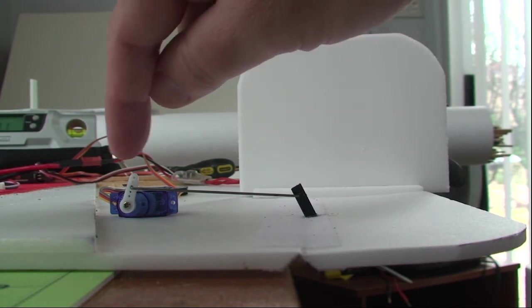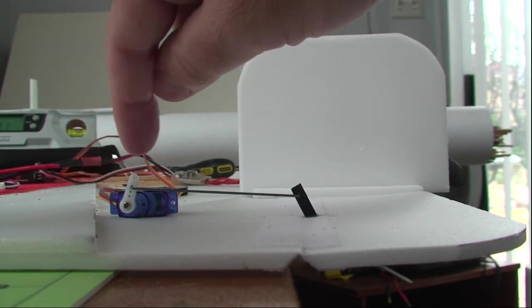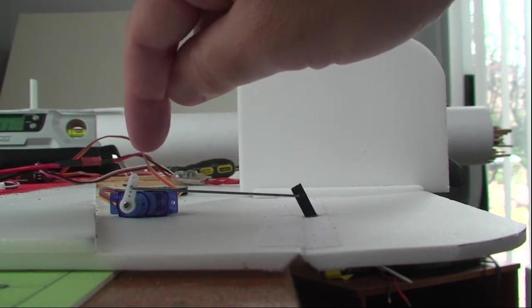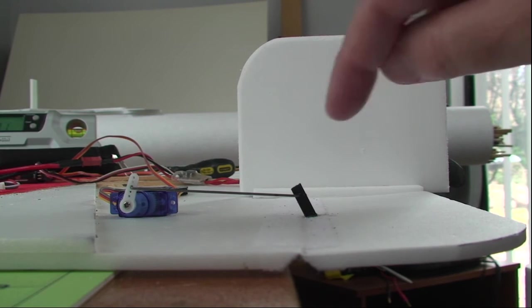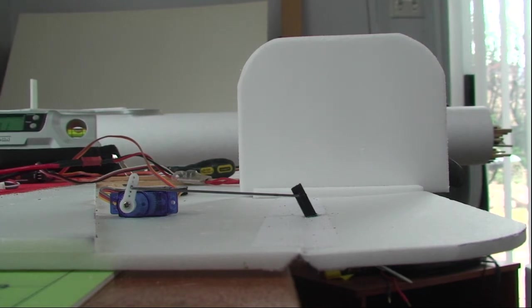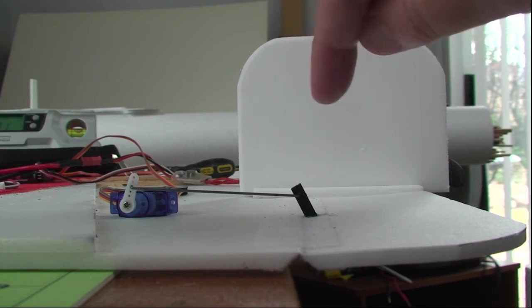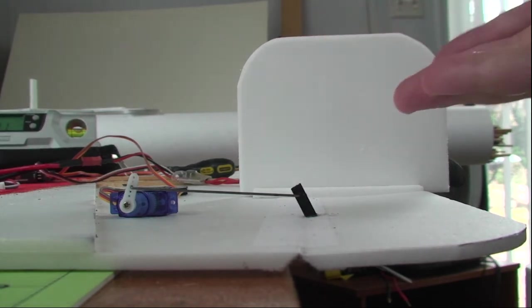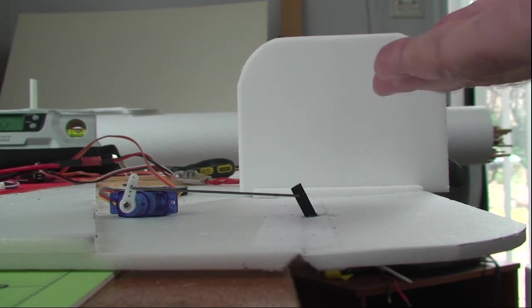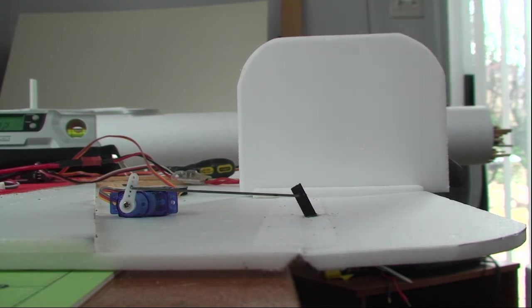And the servo arm on the servo is a little bit back from being straight up. And what this does is gives me Elevon differential, because I'm trying to avoid what's called adverse yaw. And I'm doing that by having the control surface, what I'm using as Elevons, when it goes up, go up more than when it goes down.